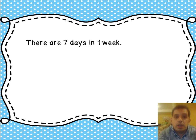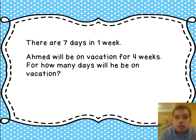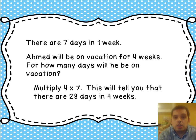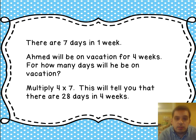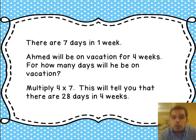There are 7 days in 1 week. Ahmed will be on vacation for 4 weeks. How many days will he be on vacation? We're going to take 4 — the number of weeks — and multiply that by 7, the number of days in a week. That tells you there are 28 days in 4 weeks. So the answer is Ahmed will be on vacation for 28 days.